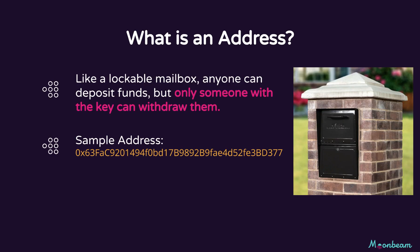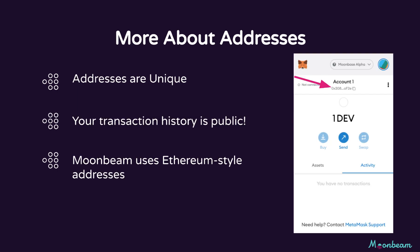Let's go over what an address is conceptually. An address can be thought of as a locking mailbox at your apartment or home. Anyone who knows your specific address can deposit mail in the box, but only a person who has the key can access what's inside. So an address is a 42-character string that begins with 0x. Additionally, addresses are unique — nobody else has the same address as you. Otherwise, it would be like sharing a bank account with somebody you didn't know.